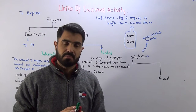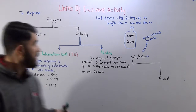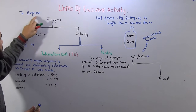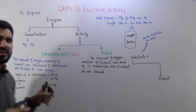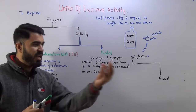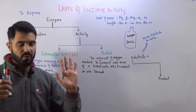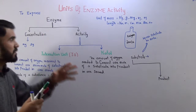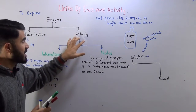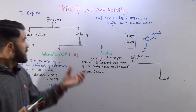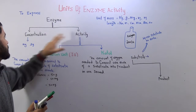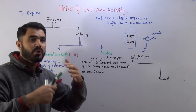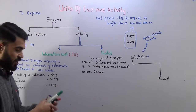There are two ways to express enzyme in terms of units. Number one: to express enzyme concentration, we simply use milligram or microgram — for example, 10 milligram or 200 milligram of enzyme. But if you want to express the activity of enzyme, that has its own units. The activity of enzyme cannot be expressed in milligram or microgram; we use other units like katal and international unit.